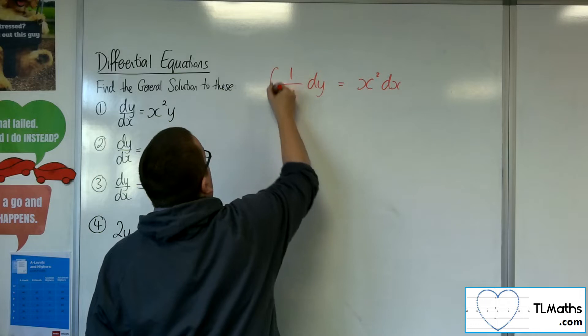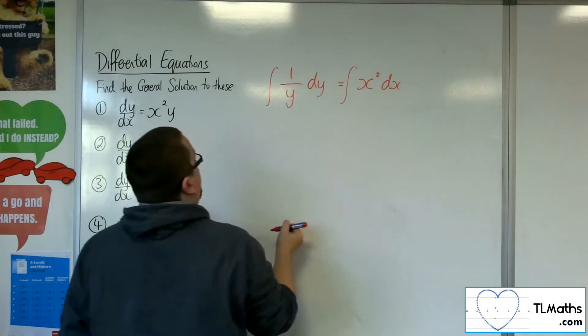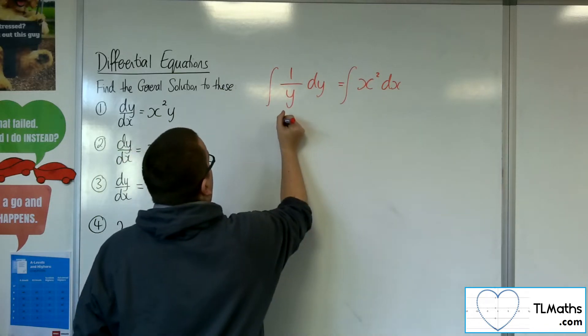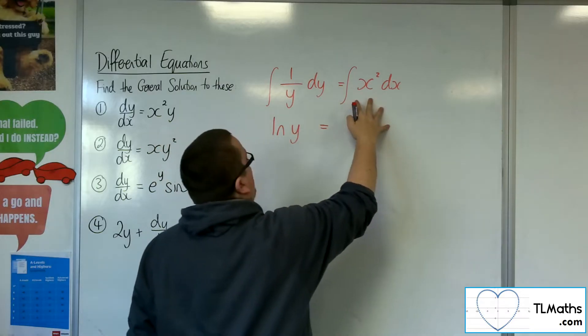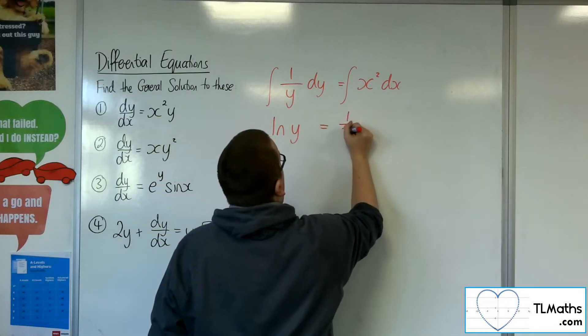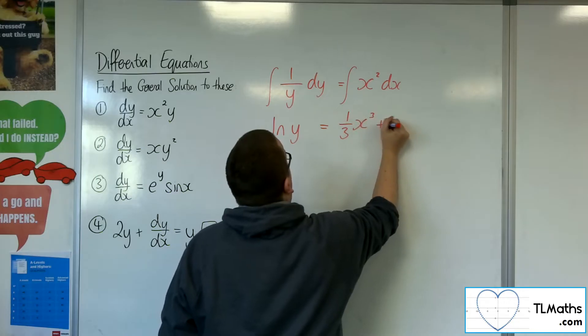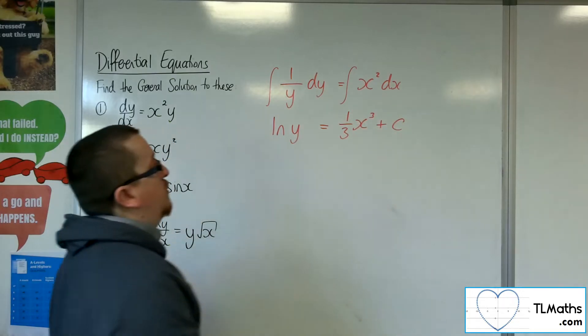So I arrive at 1 over y dy equals x squared dx. You then integrate both sides. So 1 over y dy integrates to log y, and x squared integrates to 1 third x cubed, and then put the plus c constant integration on the right hand side.